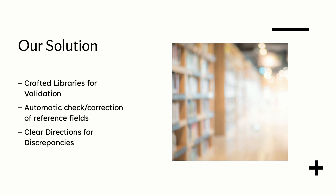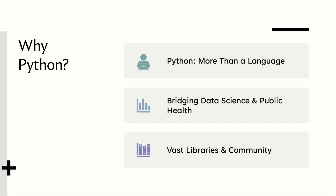Our inaugural library focused on the water quality and community water system data calls. This library and those we plan for the future encompass three core functionalities. Firstly, it integrates all data rules outlined by the water data dictionaries. Secondly, it offers automatic checks and, where feasible, corrections for reference fields like county FIPS codes. Lastly, it generates a comprehensive report detailing potential validation discrepancies, ensuring clarity and accuracy in our data sets.